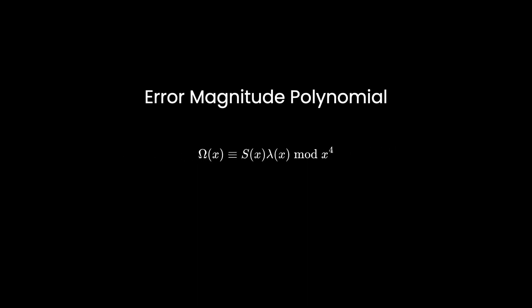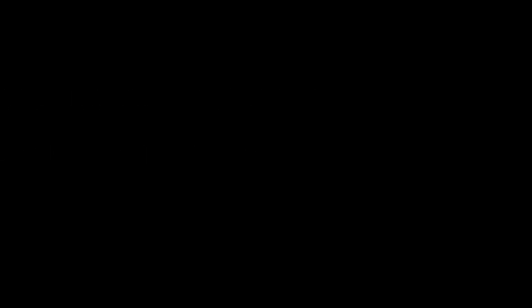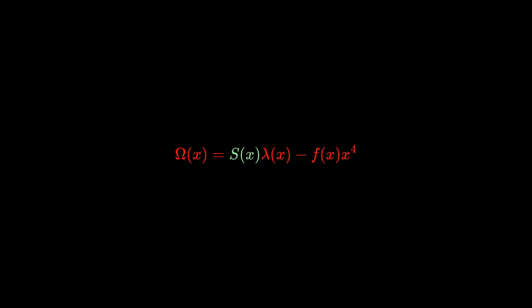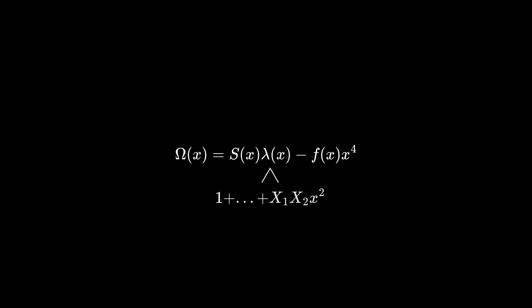Okay, let's try finding some of these polynomials with our example. The syndrome polynomial just uses the syndromes we calculated earlier. Now let's take this equation — we can rewrite it like this, where we subtract x to the 4 times some polynomial from this product. We don't actually care what f of x is. Now this might initially seem impossible to solve: all we know is the syndrome polynomial, and there just seems to be too many unknowns. But actually, if we take the definition of the error locator polynomial and expand it, we can find that the constant term is just 1.